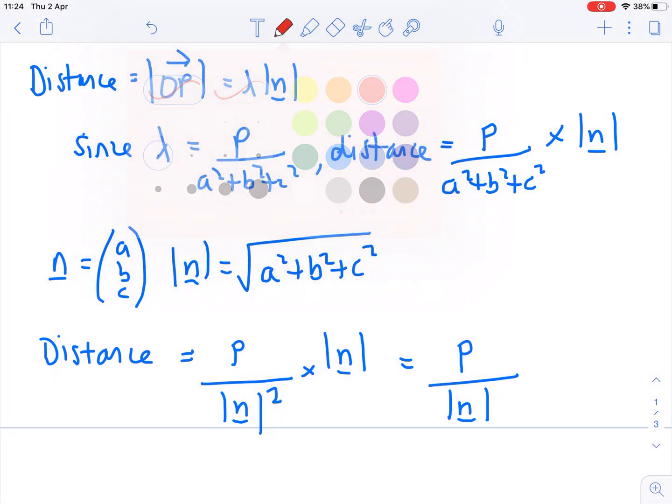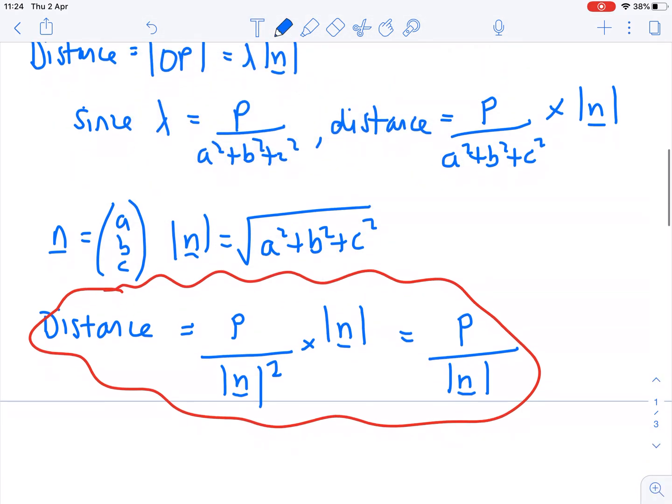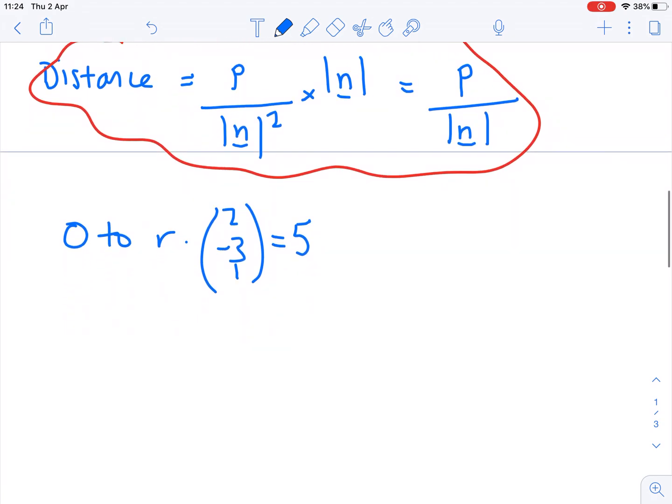Which is a very useful little formula. And if we apply it to the example that was at the top of the page, trying to find the distance from the origin to the plane R dot 2 minus 3, 1 equals 5, all I need to do is take the scalar product and divide by the modulus of the normal vector. So my distance from the origin to the plane is 5 over root 14.